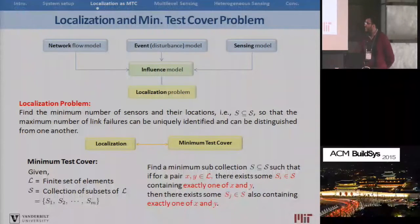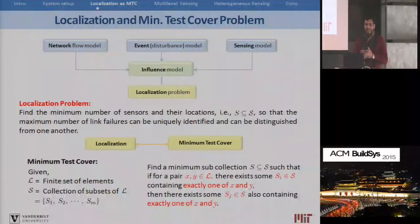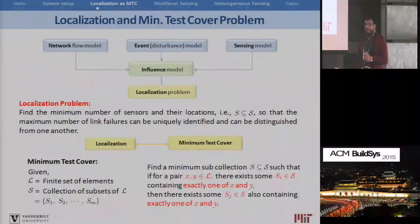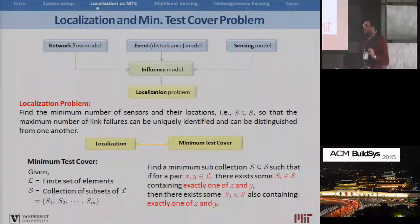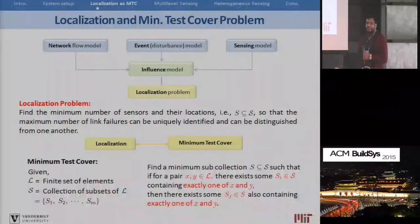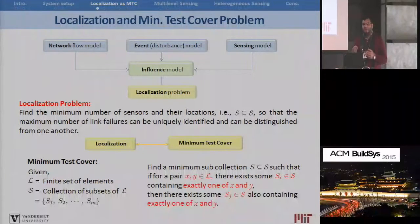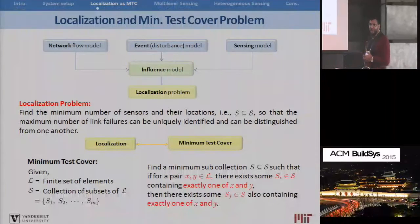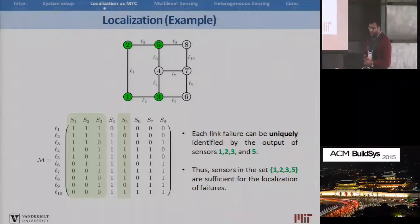What is a minimum test cover? We have a finite set of elements and a collection of subsets of these elements. Our job is to select a smaller sub-collection such that for each X-Y pair, if there existed a subset giving a different output for X and Y, then our smaller sub-collection should also contain such a subset giving a different output for that pair. This is precisely the minimum test cover problem.